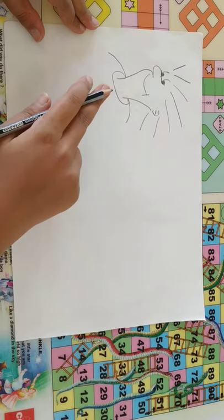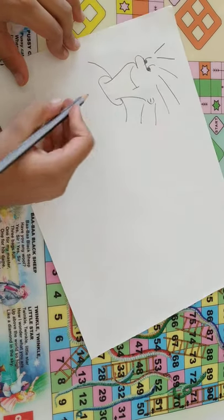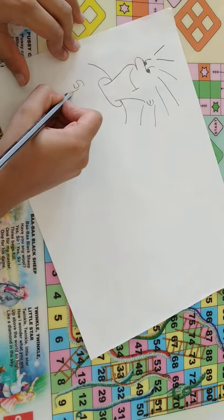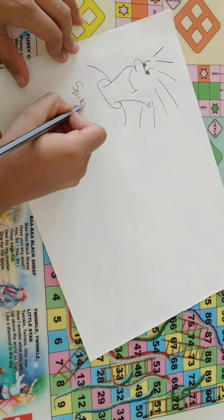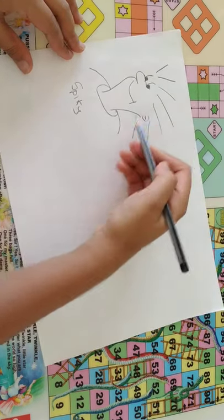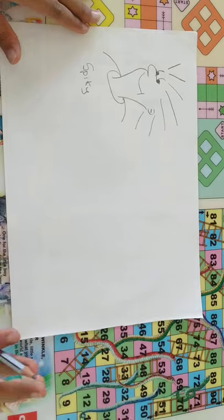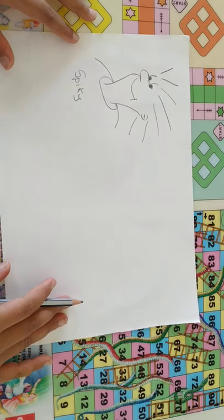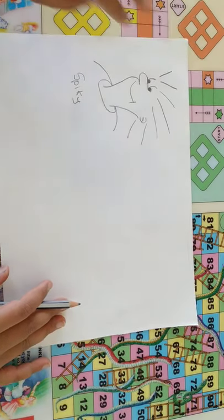You can also give a name to this cartoon. Let's give this cartoon a name spiky. Because it has spiky hair. You can also draw the cartoon with various types of nose, eyes and hair.